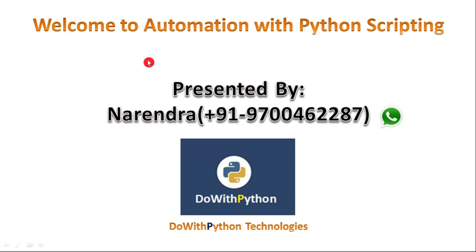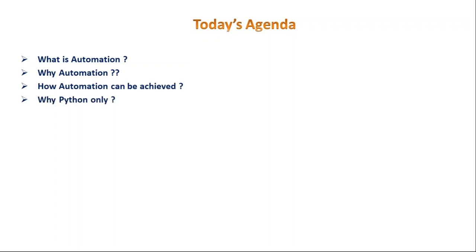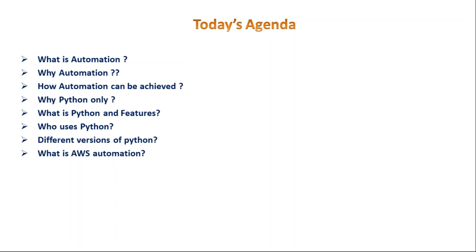Now we are going to start our session. The agenda for today's session is: first we will discuss what is automation, then why it is required, and how automation can be achieved. We'll cover why Python is used for automation, what Python is and its features, who uses Python, different versions of Python, what is AWS automation, some demo scripts, and finally the course syllabus.